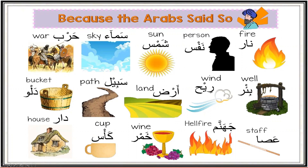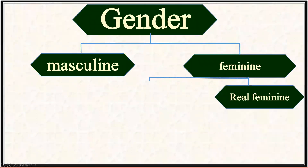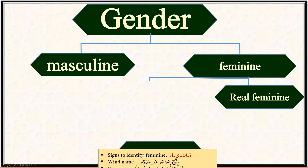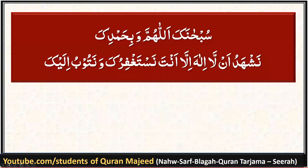To summarize today's lesson: gender can be divided into masculine and feminine. Feminine can be further divided into real feminine — those which are biologically feminine, like mother and sister — and fake feminine. Fake feminines can be identified through signs such as round ta, alif with elongated ta, alif mamdooda, and alif maqsura. There are also groups identified as fake feminines: wind names, fire names, body parts in pairs, and the story words. Alhamdulillah, today we have learned the very important property of an ism: gender.